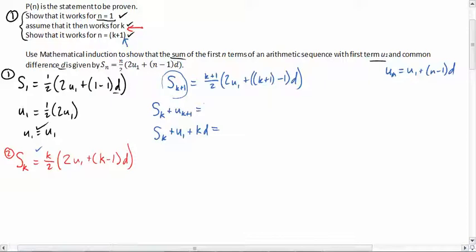There's no u k plus 1 up here, so we want to get rid of that. In fact, there's no s k here either, which is where this step 2 is going to be important, because there's your s k. So we're going to replace s k with our assumption in step 2. This is an essential step for all of these inductions. So s k we're going to replace with k over 2 times 2u1 plus k minus 1 times d, and then we've got the plus u1 and then plus kd.